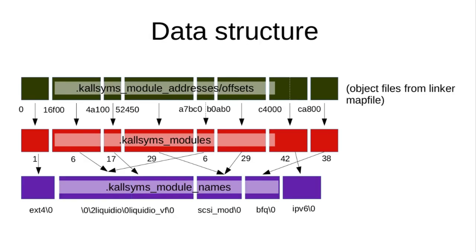The data structure is essentially a binary search table of addresses — one per object file — plus a binary search table of object file names and a binary search table of module names. There's some optimization in here: if several ranges are contiguous, we can treat them as the same object.